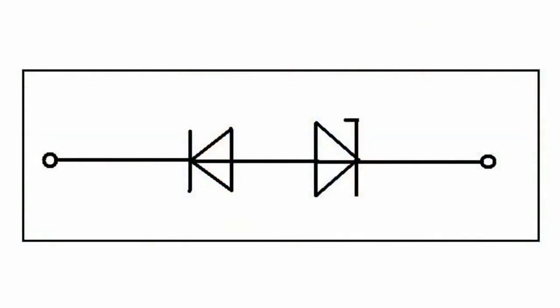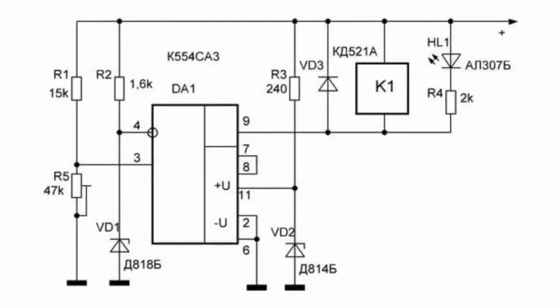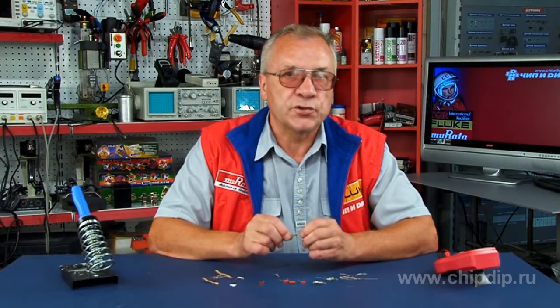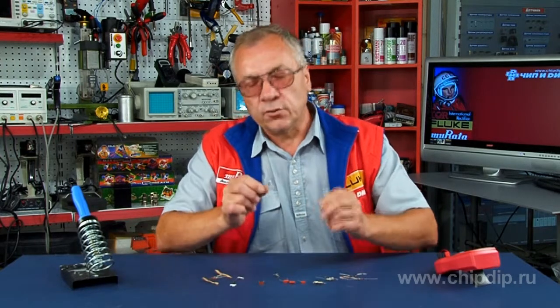Precise stabilitrons are used in power supply units as a standard voltage reference. They are basic units in various circuits which require high-precision stabilization of voltage level. Precise stabilitrons consist of compensating diodes and stabilitrons integrated in one chassis.